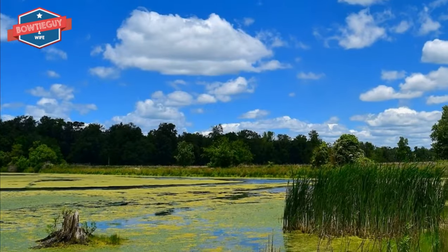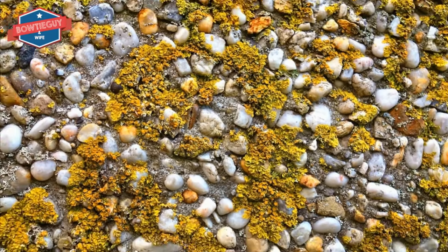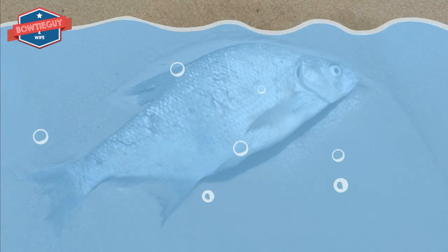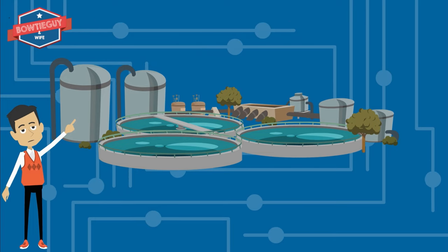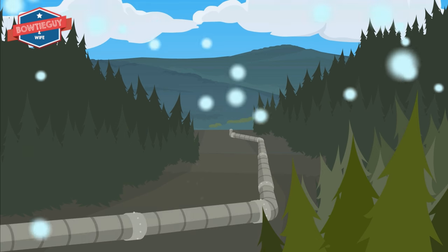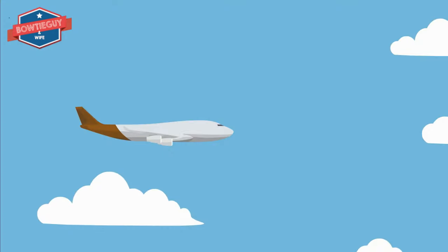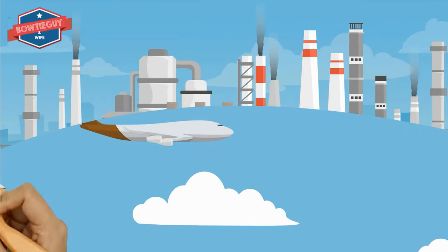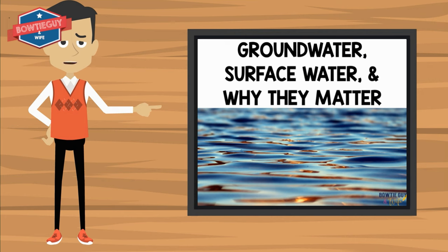Phosphorus found in most fertilizers harms water by creating algal blooms. This process, called eutrophication, turns the water green, clouds the water, causes odor problems, and depletes the oxygen that fish and other species need, suffocating them. When sewage is not properly treated, it causes ecological damage and a disaster with health risks as well as a massive economic loss. Instead of discharging sewage directly into a nearby body of water, it's better to let it pass through a combination of physical, biological, and chemical processes that remove some or most of the pollutants. Spills, leaks, or improper disposal of gasoline can cause contamination of soil, groundwater, and surface water, in addition to the air. Leaking underground storage tanks or pipelines can also cause gasoline to easily enter surrounding soil and groundwater.